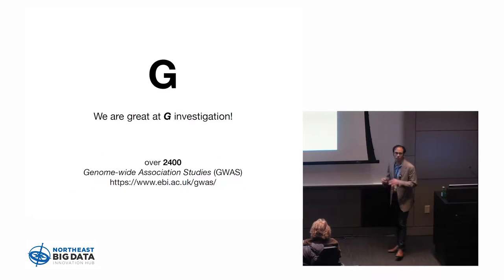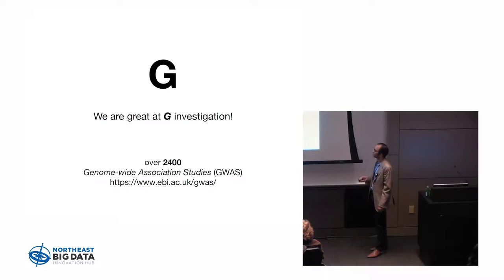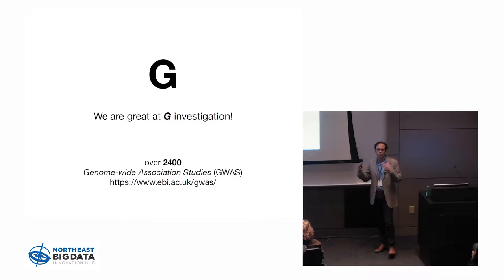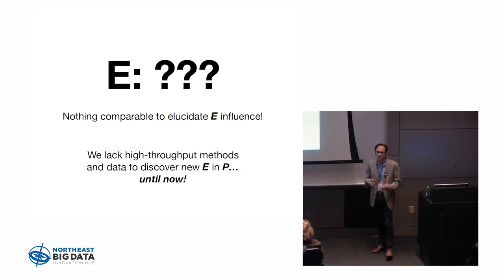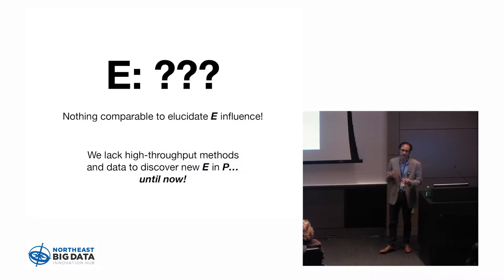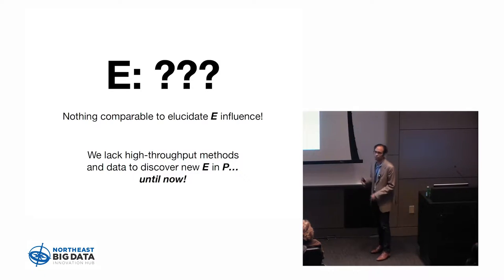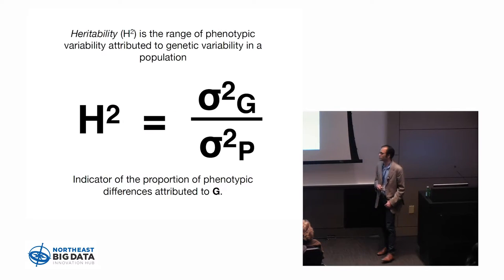We're great at genomic investigation today — we have new high-throughput big data ways of looking for genotypes or genetic factors related to disease. But we really have no big data platform to do this for environmental exposures — nothing comparable to what we have in genomics today to elucidate, in a high-throughput fashion, environmental factors associated with disease risk.